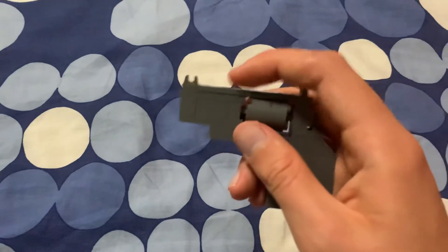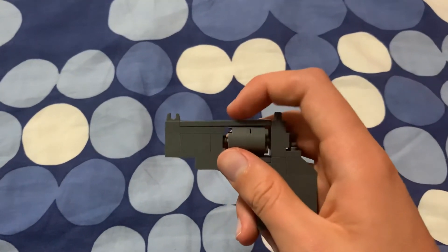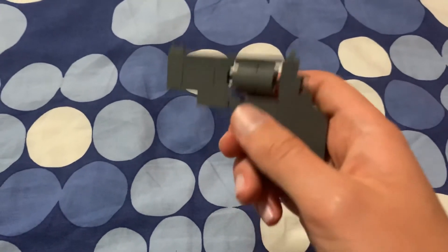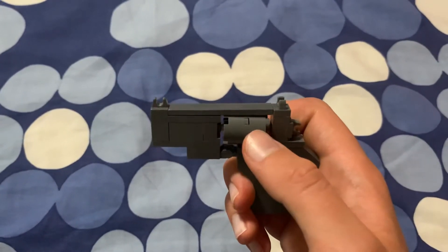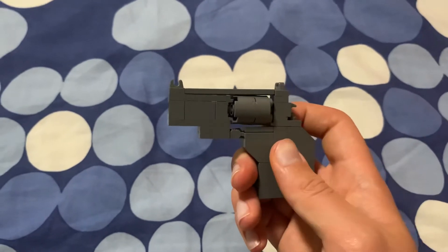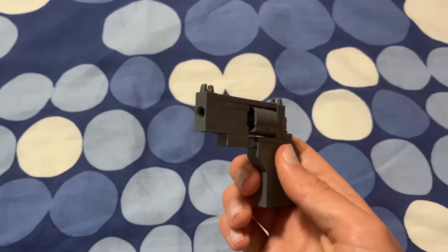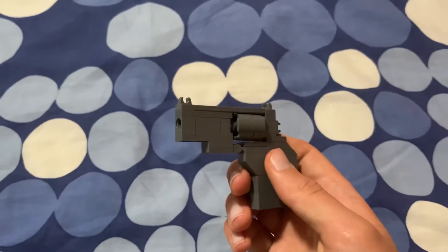Also, this grey piece up here is a little bit slanted because of these two round pieces right here, but I'm not going to worry about that. This LEGO Revolver is a custom-made revolver.